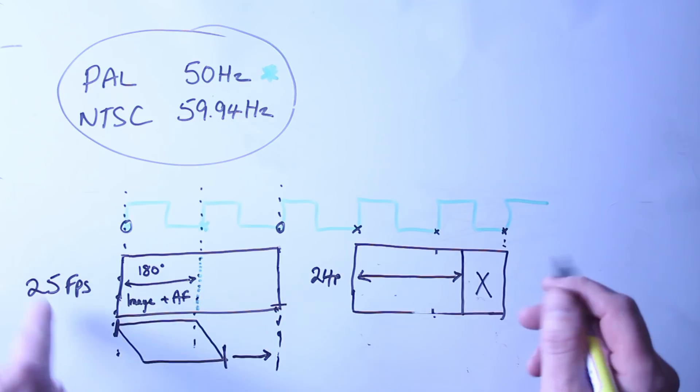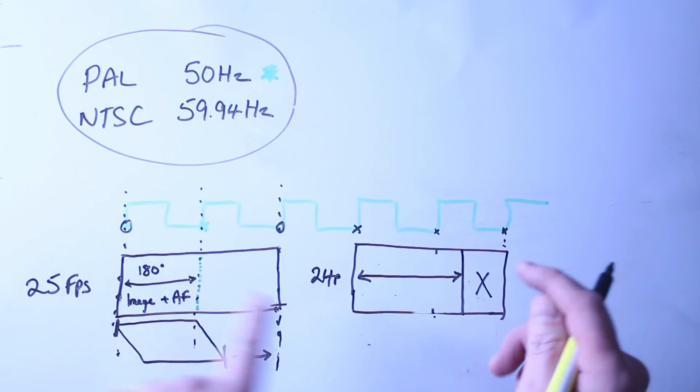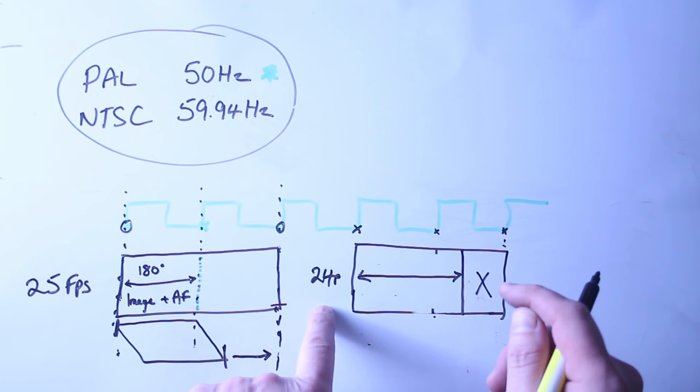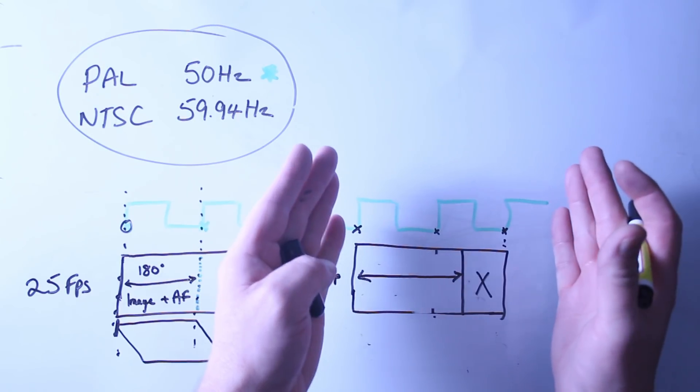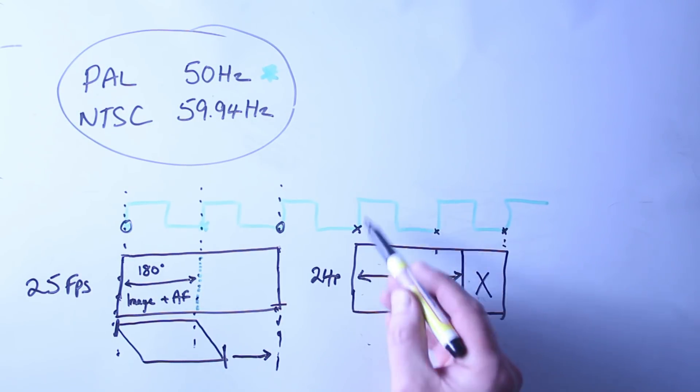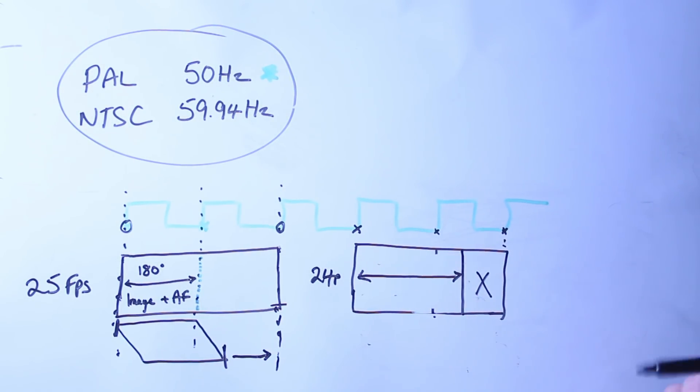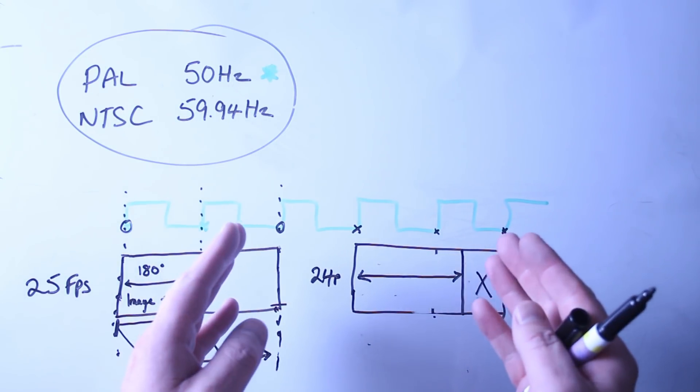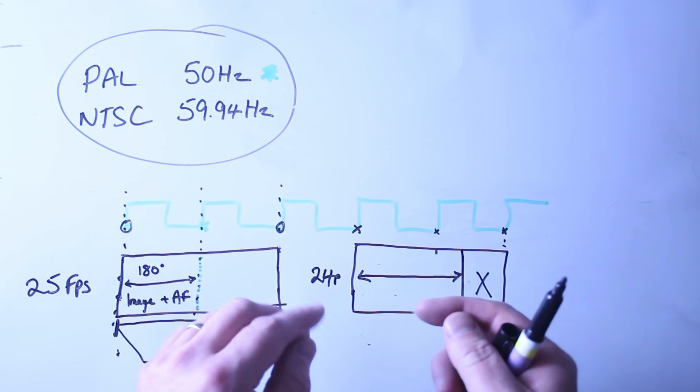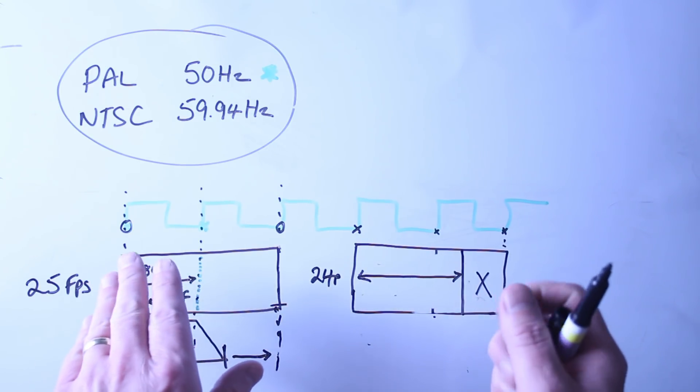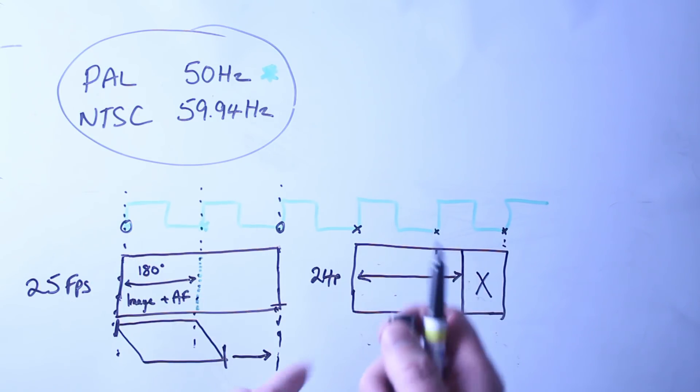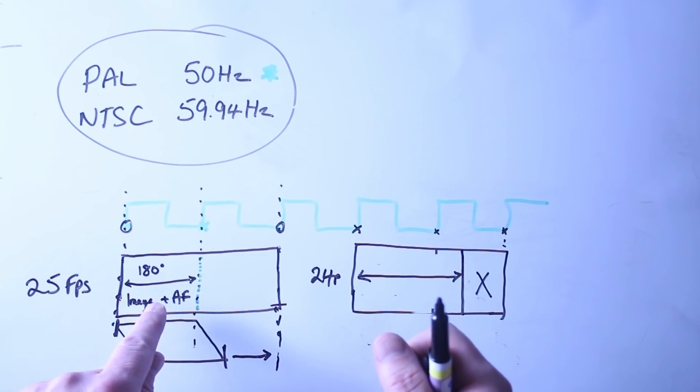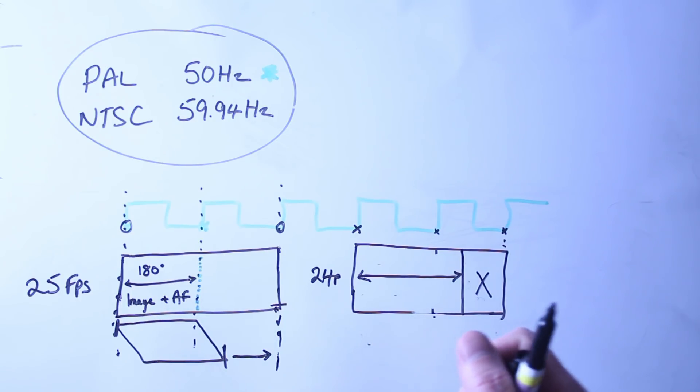So why does 25p work and 24p not? The reason 24p doesn't work is because when you're at 25p and at 50 Hz, exactly half of this process is available for each part. When you go to 24p, the frame length of the 24p is actually longer, so you end up with a little bit of time here before the next cycle starts that you can do nothing with.